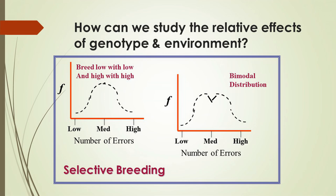He omitted the rats who made medium numbers of errors from the experiment. After a few generations of selective breeding, the researcher saw a bimodal distribution. We're no longer looking at a normal curve or a bell-shaped curve — there's a dip in the middle. The selective breeding is causing fewer rats to make a medium number of errors, with peaks at few errors and high numbers of errors. We've gone from a normal distribution to a bimodal distribution.